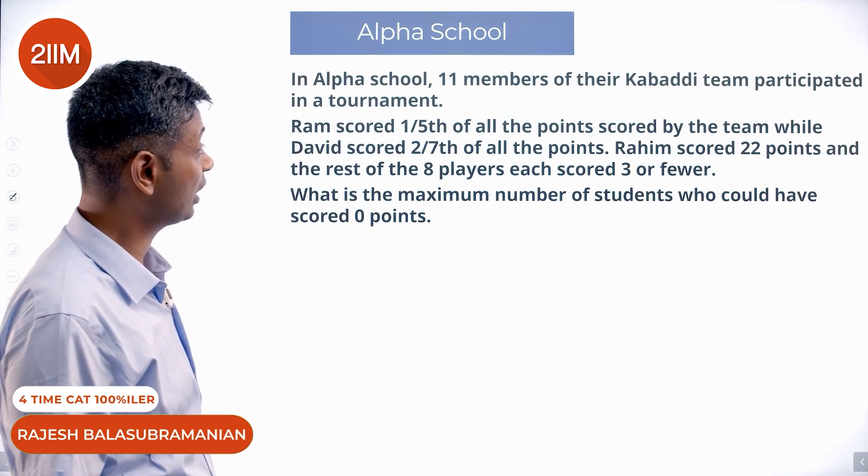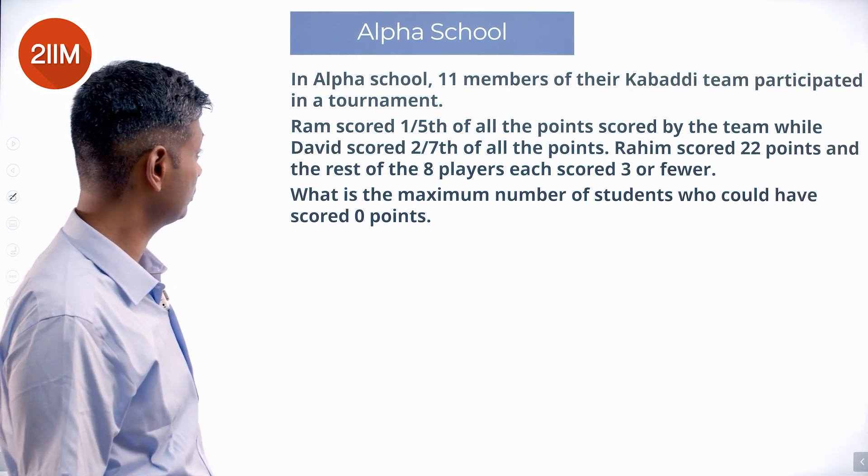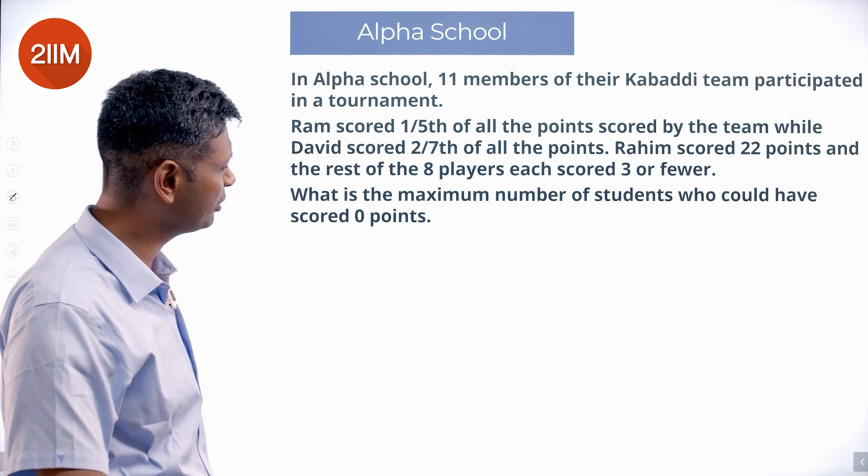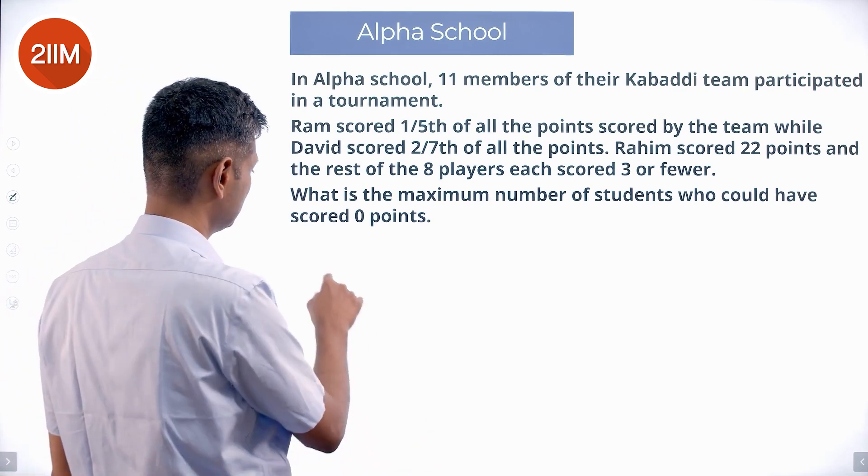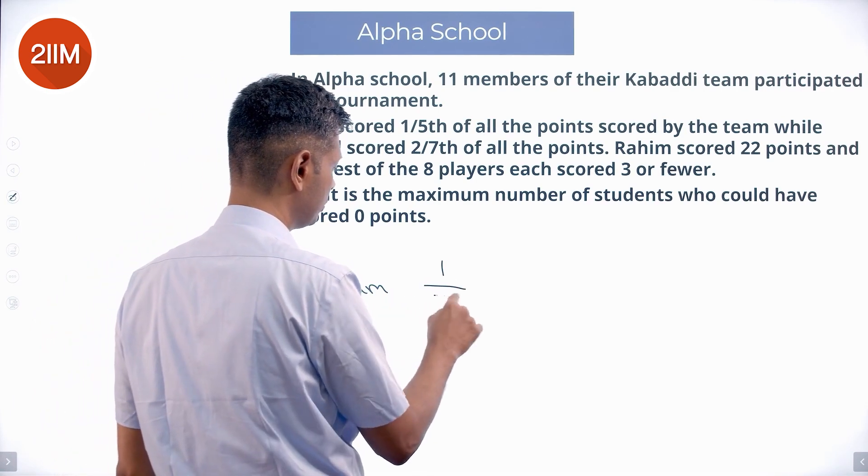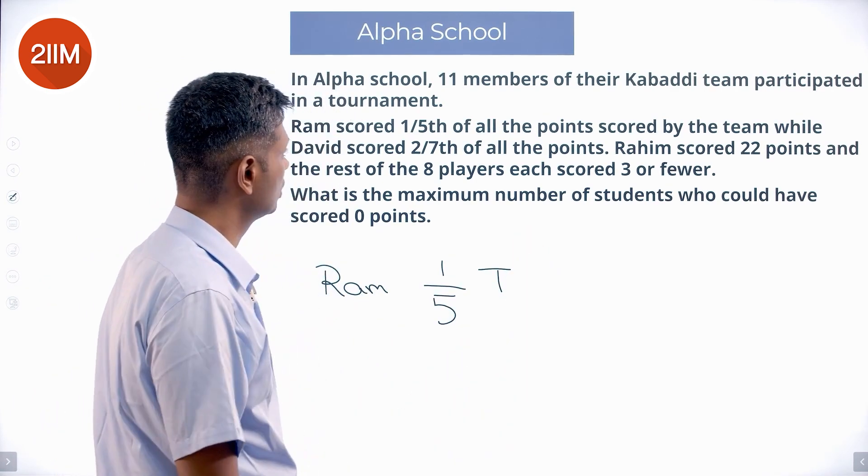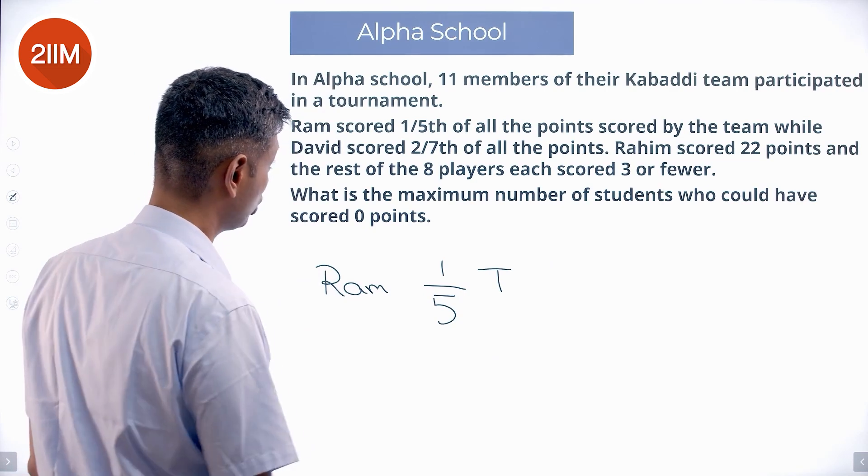In Alpha school, 11 members of their Kabaddi team participated in a tournament. Ram scored one-fifth of all the points, one-fifth of the total points. David scored two-seventh of all the points.